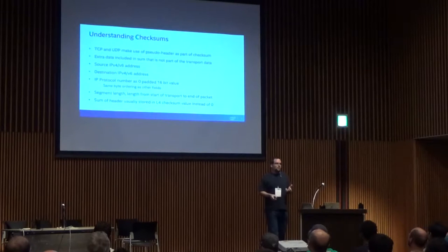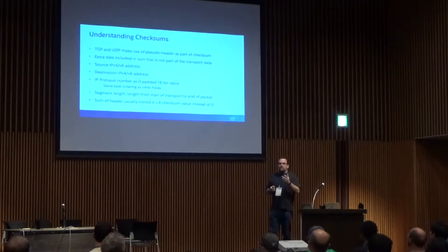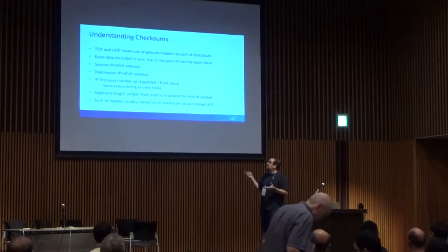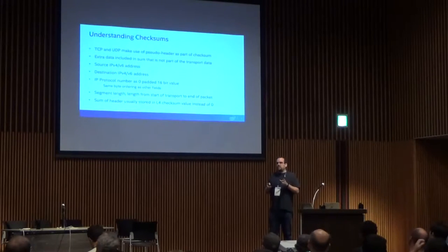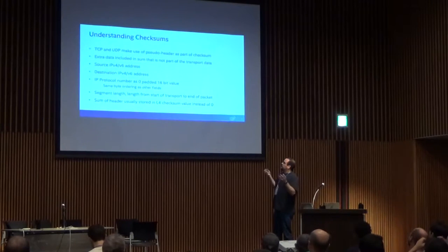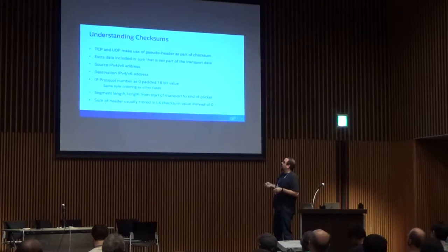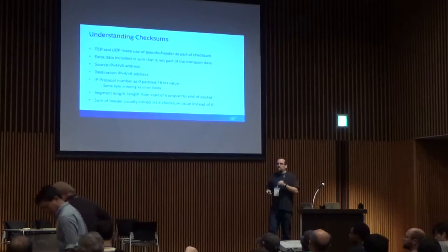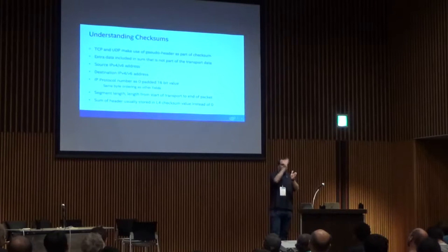For TCP and UDP it gets more complicated: there's a pseudo-header included as part of the checksum. Those extra fields consist of source and destination IPv4 or IPv6 addresses, a protocol number padded to 16 bits in big-endian byte order, and the length. You store that ones complement sum in the L4 checksum field. When we ask for NetFF hardware CSUM as a feature, we expect that value to be populated so the hardware can start from that point, compute the full checksum, and store the result at the correct offset.